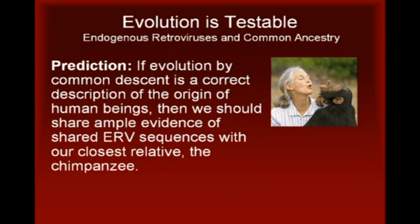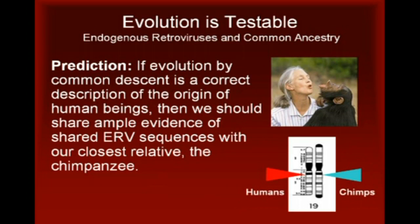With the completion of both the human and chimpanzee genome projects in the last decade, this prediction has been extensively and definitively tested. It turns out that we do share ERV sequences with chimpanzees at identical locations on our respective chromosomes. For instance, in exactly the same spot on the long arm of chromosome 19, humans and chimpanzees have the same ERV sequence.